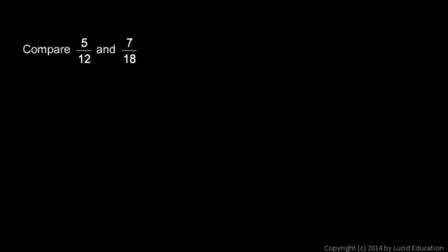In this example, we're told to compare 5-twelfths and 7-eighteenths. So we need to find the least common multiple of 12 and 18. And you might be able to see that it's 36. 36 is a multiple of 12, and it's also a multiple of 18.